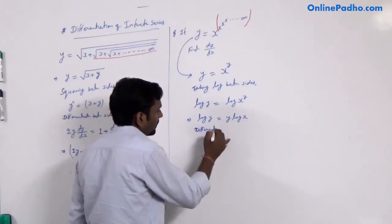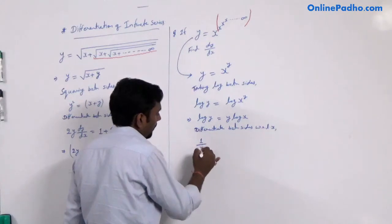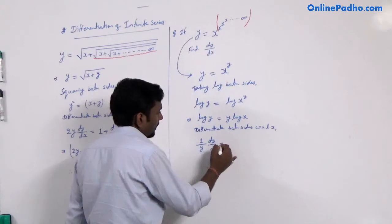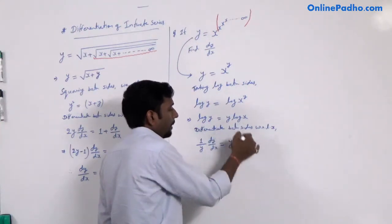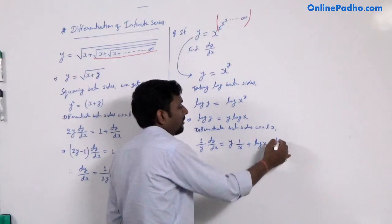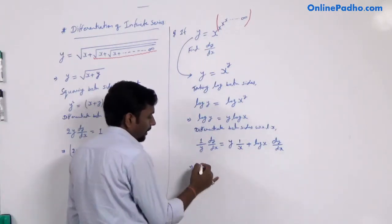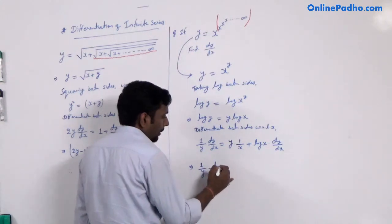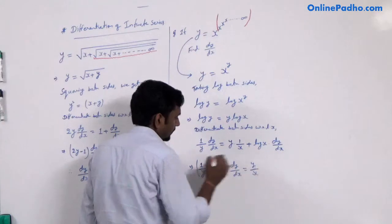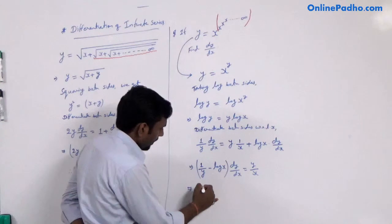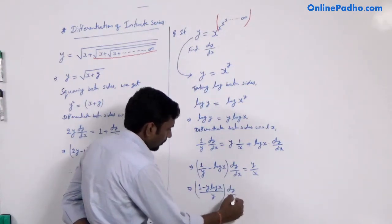Now we can differentiate both sides with respect to x. By implicit differentiation, we get 1/y · dy/dx equal to — applying the product rule to the right-hand side — y multiplied by the derivative of log x, which is 1/x, plus log x multiplied by the derivative of y, which is dy/dx. Shifting dy/dx to the left-hand side: (1/y − log x) · dy/dx equals y/x. Taking LCM y, we get (1 − y·log x)/y · dy/dx equals y/x.